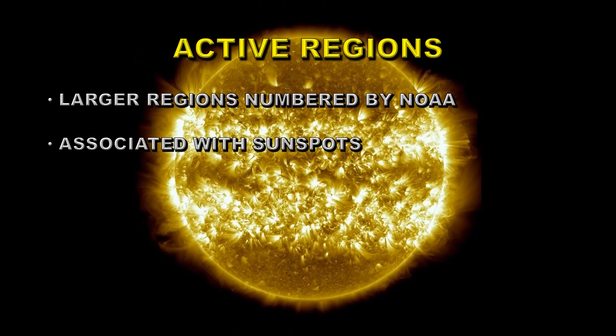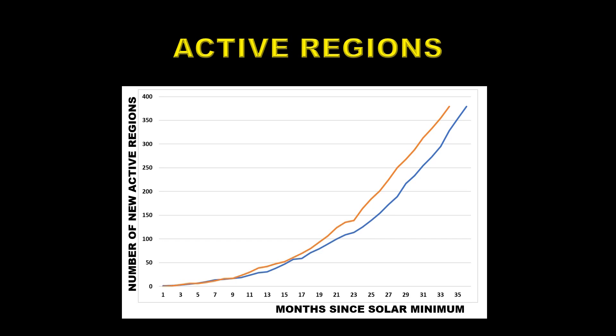Lastly, we look at active regions — areas of solar activity associated with sunspots. The larger ones are numbered by NOAA, and I'm keeping track of those NOAA-numbered regions, comparing Solar Cycle 24 at this stage with Solar Cycle 25. Once again, Solar Cycle 25 is outperforming Solar Cycle 24, not quite as spectacularly as some other activity indicators, but nonetheless quite significantly.